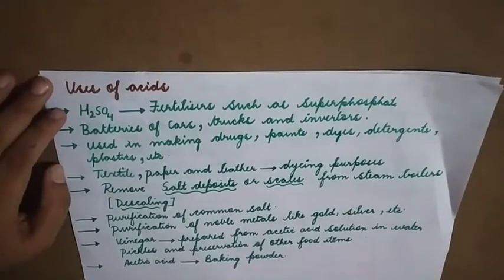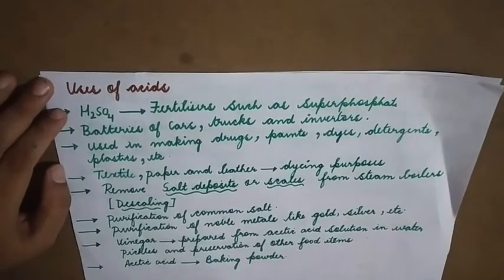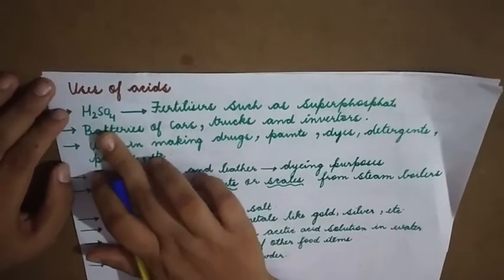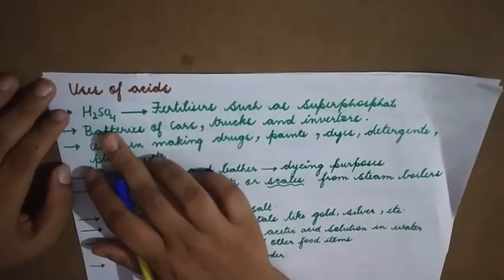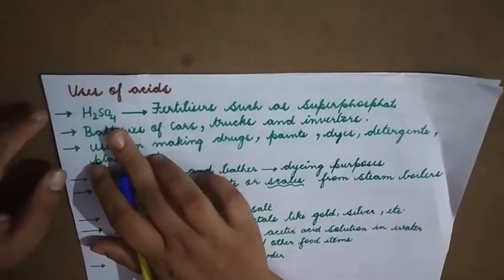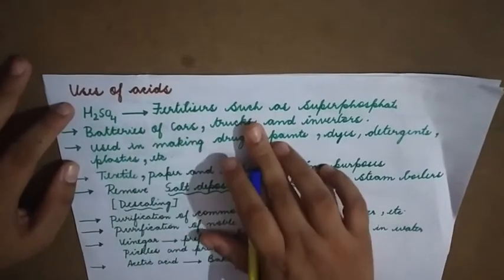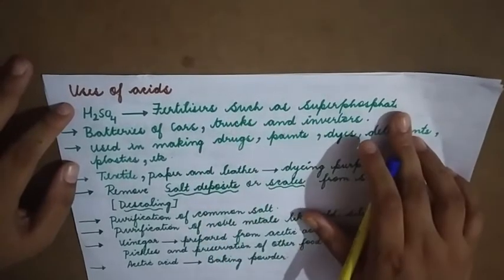Good morning students. Today let's study the uses of acid. Sulfuric acid — the formula of sulfuric acid is H₂SO₄. Sulfuric acid is used in the preparation of fertilizers such as superphosphate.